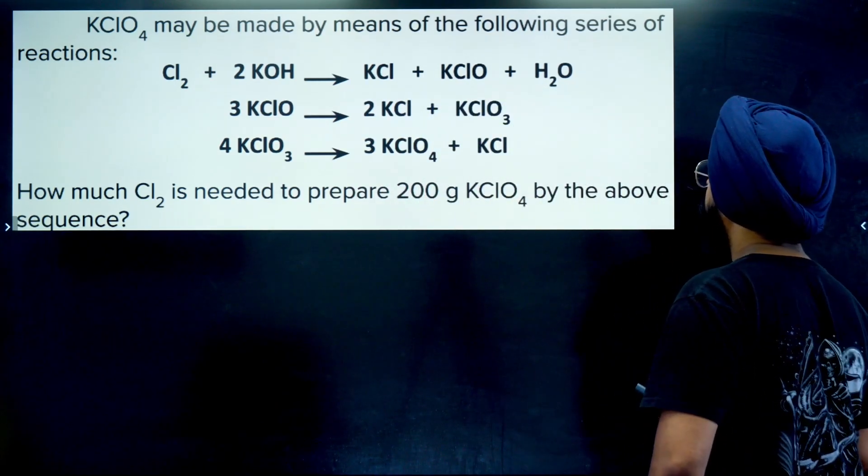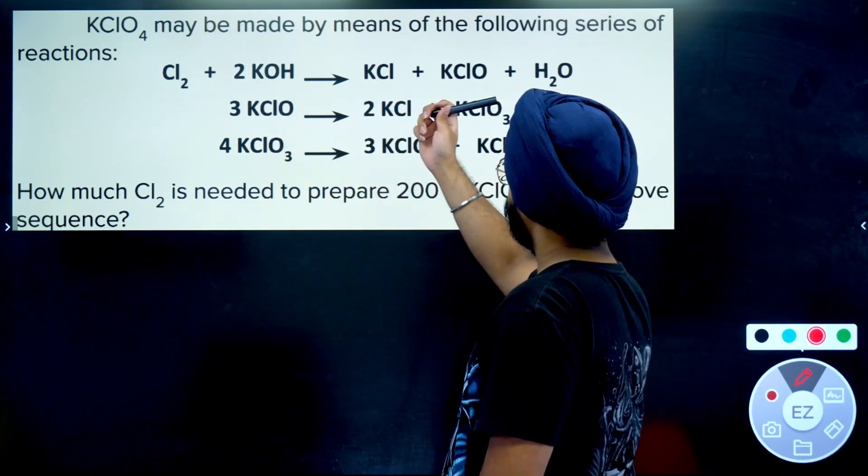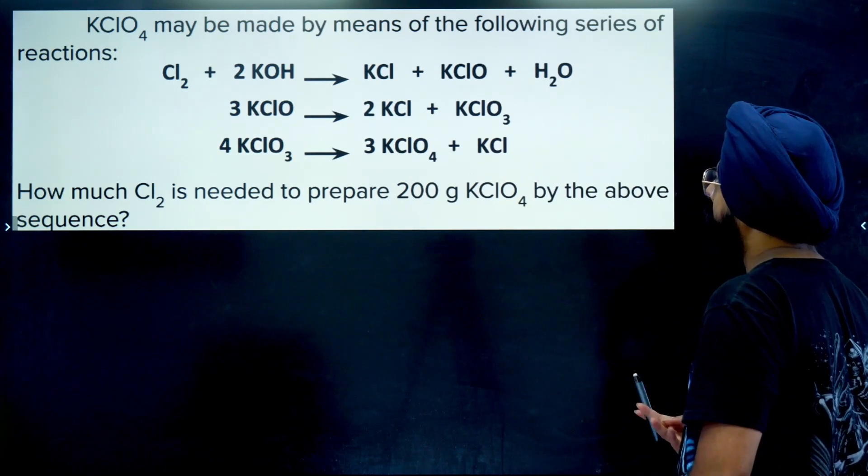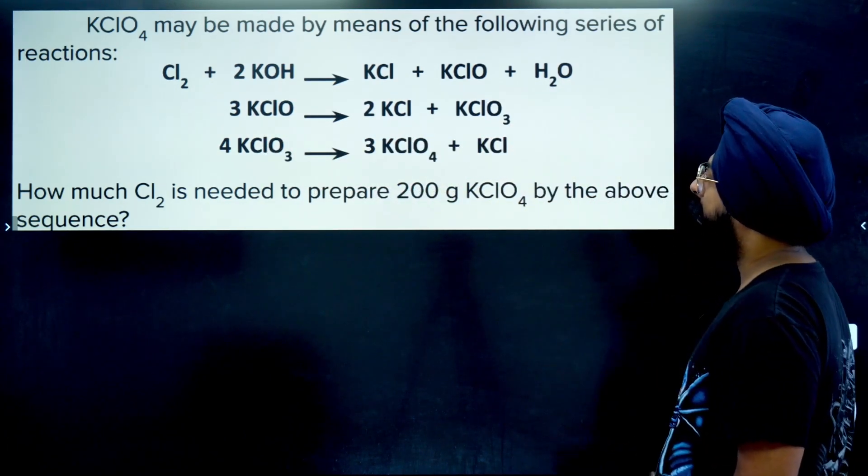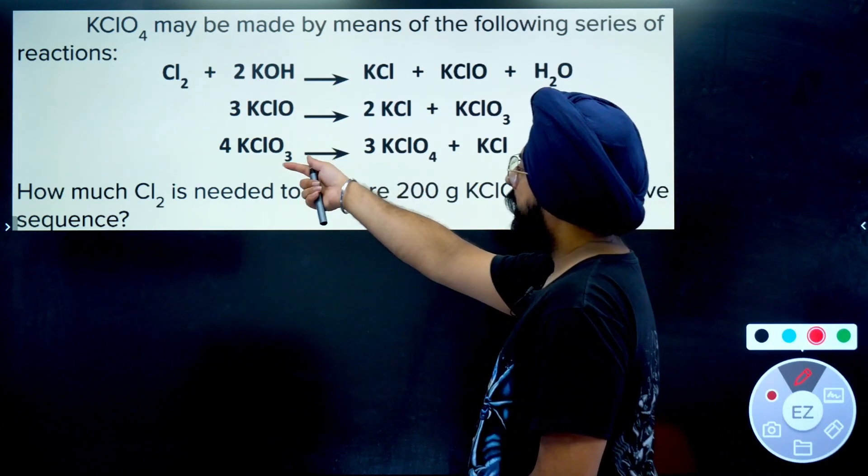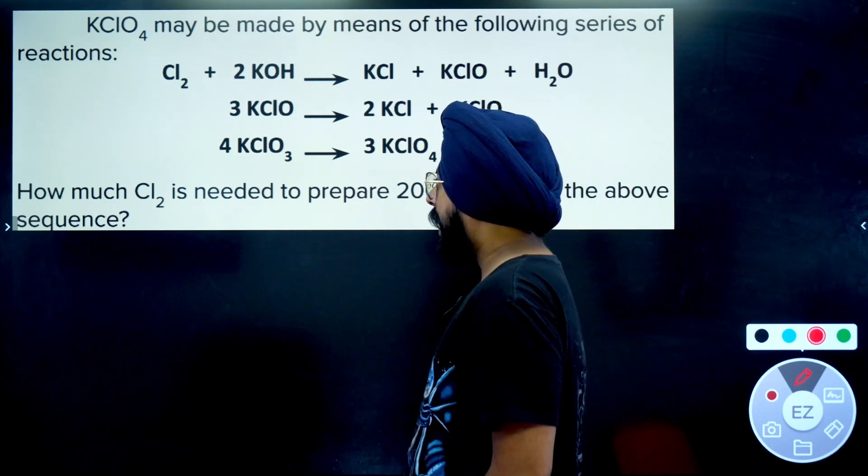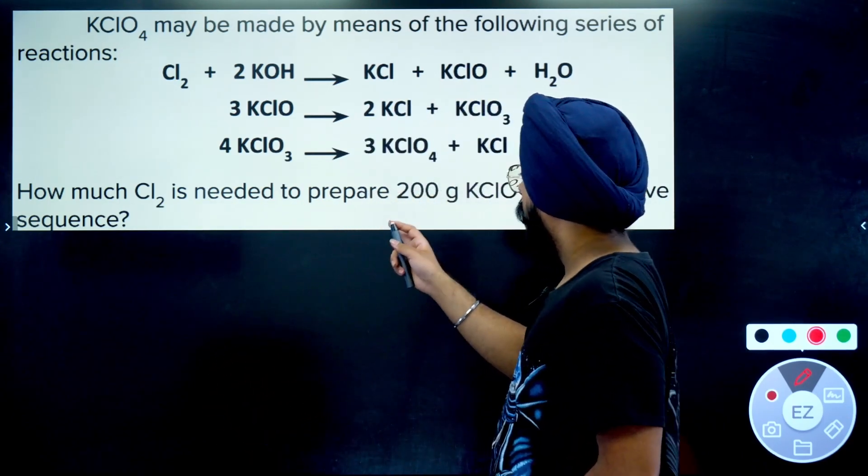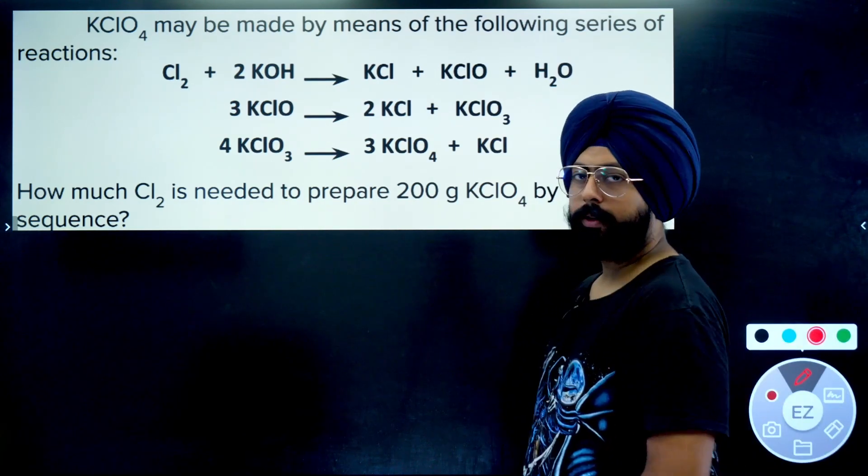KClO₄ may be made by means of the following series of reactions: Cl₂ plus 2KOH gives you KCl plus KClO plus H₂O. Then 3KClO converts into 2KCl plus KClO₃, and then 4KClO₃ gets converted to 3KClO₄ plus KCl ultimately. How much Cl₂ is needed to prepare 200 grams of KClO₄ by the above sequence?